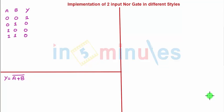Welcome to in 5 minutes. The agenda of this clip is to understand how to make a two input NOR gate using static CMOS, pseudo NMOS, dynamic logic and C square MOS logic. Okay let's get started.